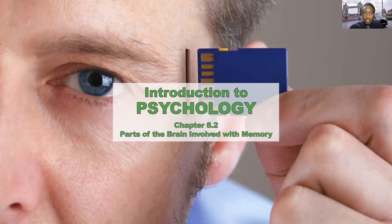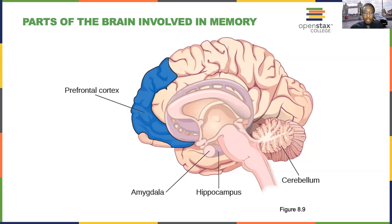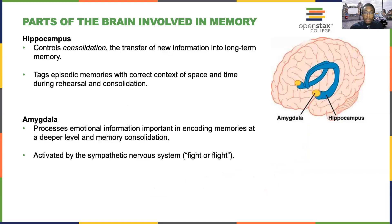Welcome to Chapter 8 of Intro to Psychology. In this video, I'll be discussing the parts of the brain that are involved in memory. There are two main parts of the brain we'll be discussing: the amygdala and the hippocampus. We previously learned about both of these structures in Chapter 3.